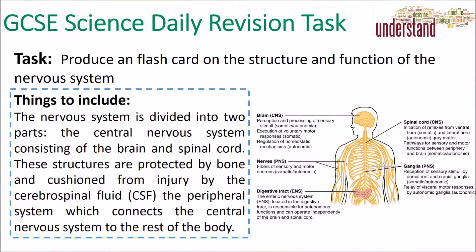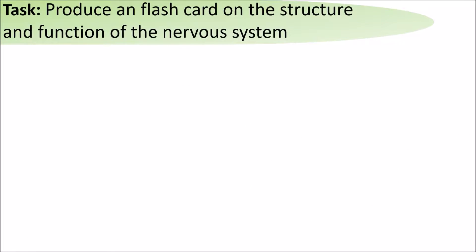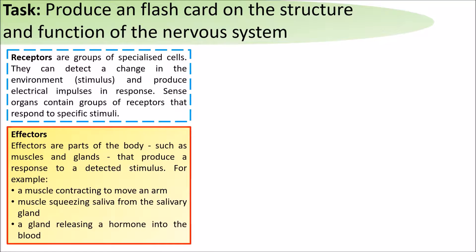Hello and welcome to today's daily science revision task, which is to produce a flash card on the structure and function of the nervous system. The nervous system is split up into a number of different parts, the two main ones being receptors and effectors.